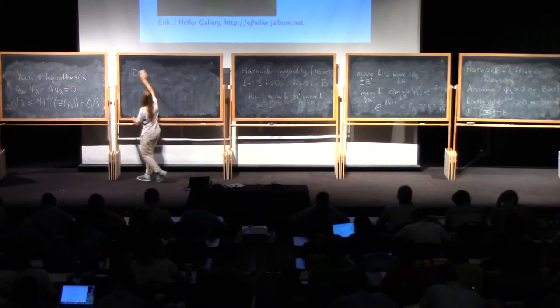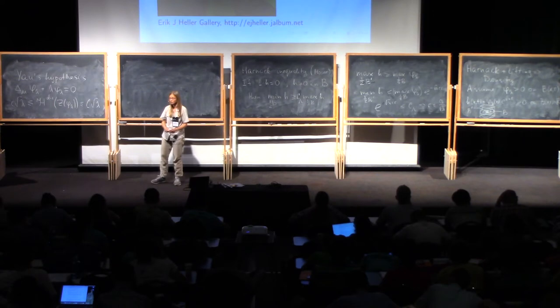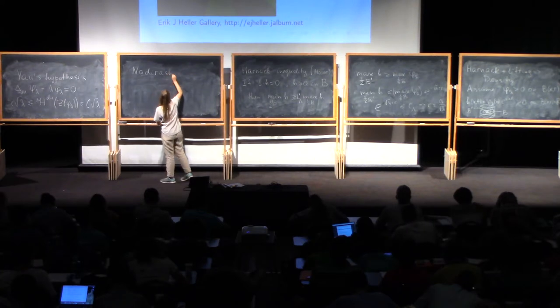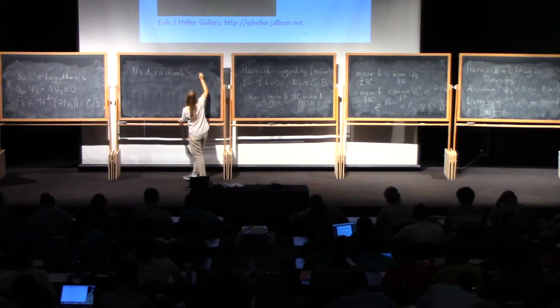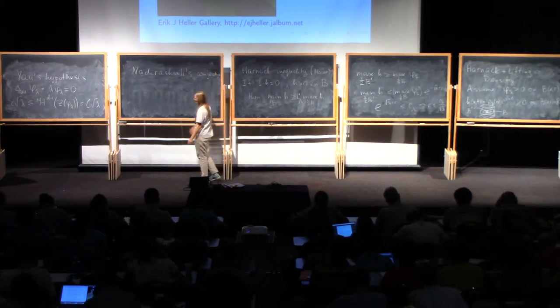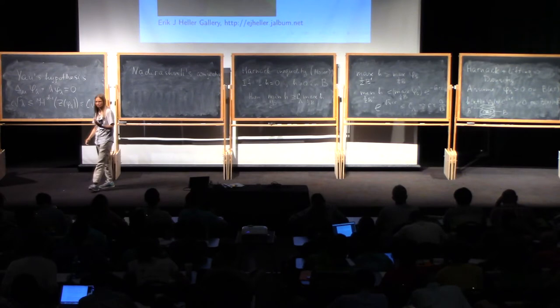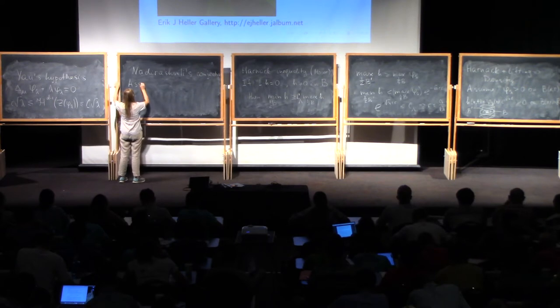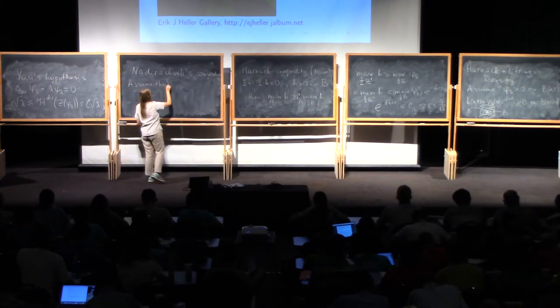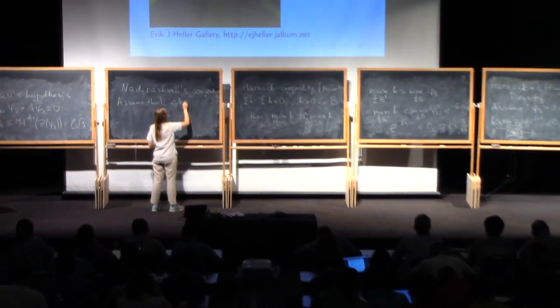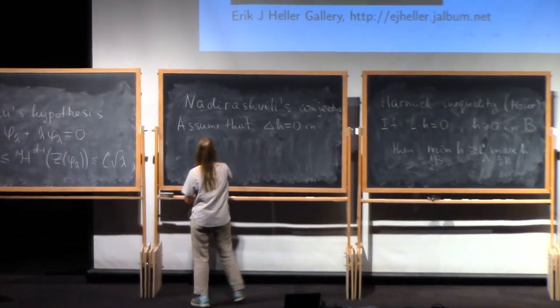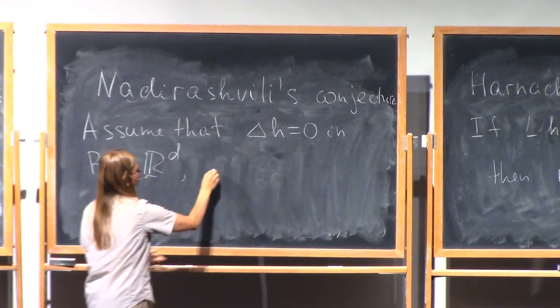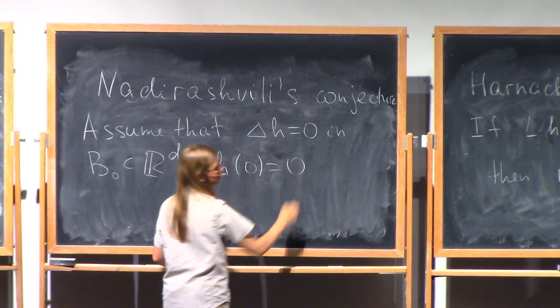I have some more minutes to tell you about part of the truth about Yau hypothesis. There was another very nice conjecture of Nadirashvili that was initially formulated for harmonic functions, harmonic functions, say, in R3.